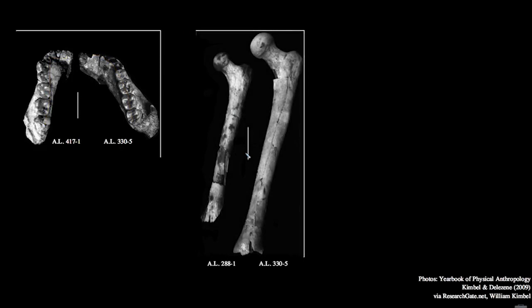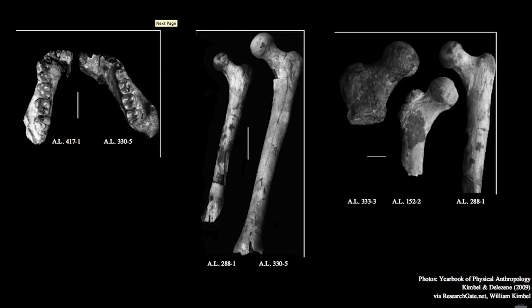Here are two femora preserved from Hadar. The one on the left you might recognize as belonging to Lucy, AL288-1. The one on the right comes from AL330-5, a much larger individual. Both femurs show the same basic shape and evidence of obligate bipedality, but there is considerable difference in size. The femur is a good element for estimating overall body size because it supports most of your body weight during bipedal locomotion. Looking at other femora from Hadar, we can see more variability in proximal femora and considerable variability in the overall size of the individuals they came from.